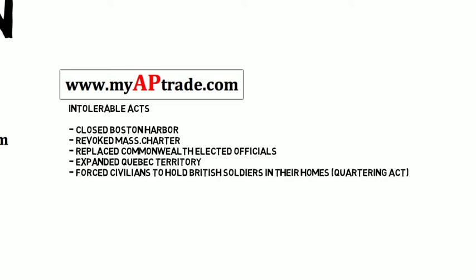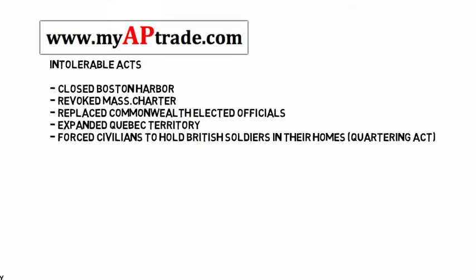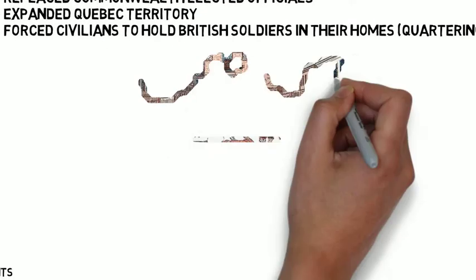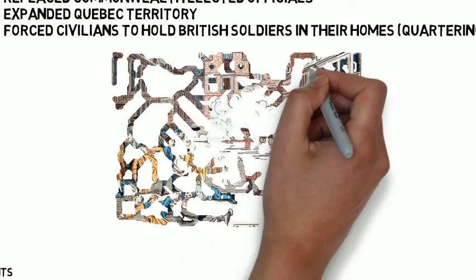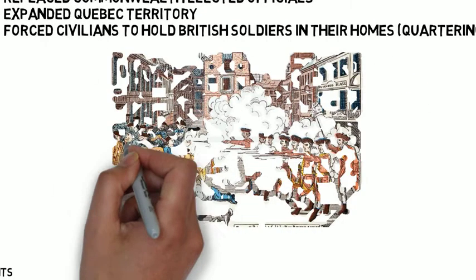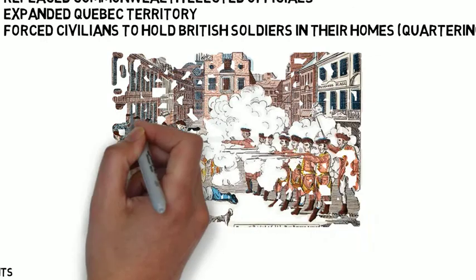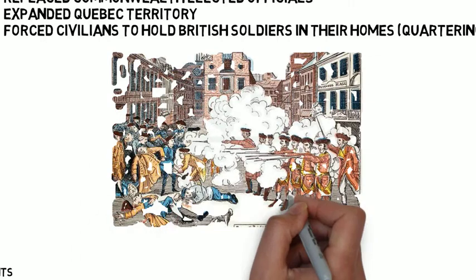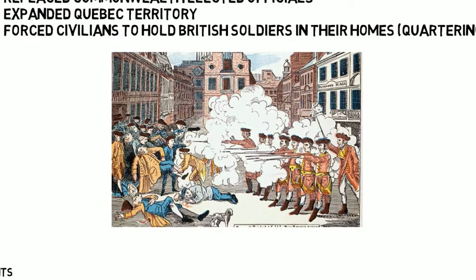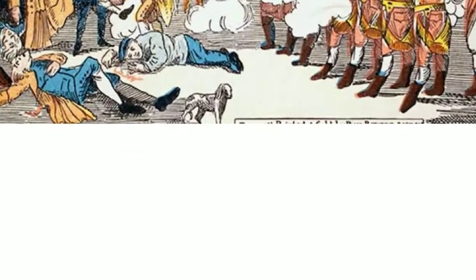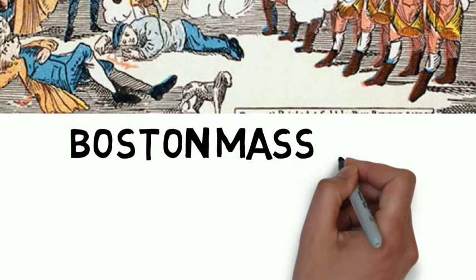The Intolerable Acts were pretty intolerable. As a result of these acts and increasing British control over the colonies, the colonists protested frequently. During one of the protests in Boston, British soldiers tried to get a group of rambunctious protesters in line and ended up firing into a crowd, killing five civilians. This is referred to as the Boston Massacre.